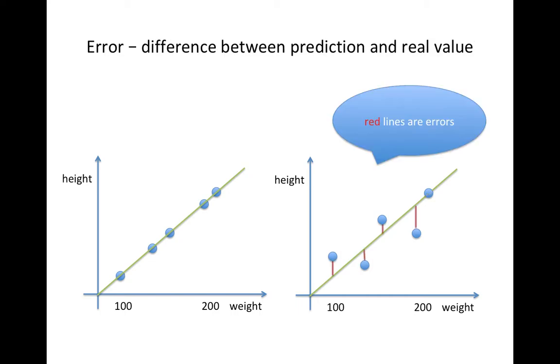Mathematically, we can define error as the distance between the actual data point and our linear line. You can see the left linear line's error is zero, while the right side linear line has some errors.